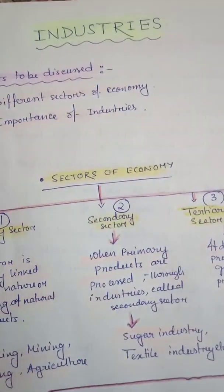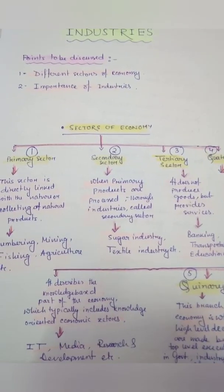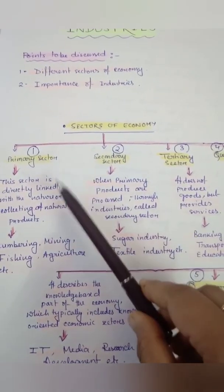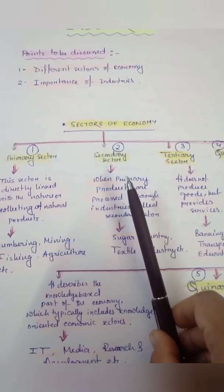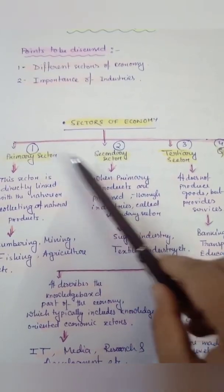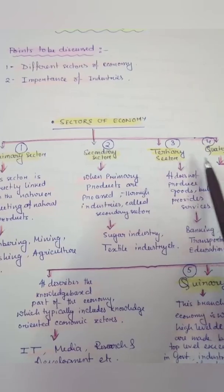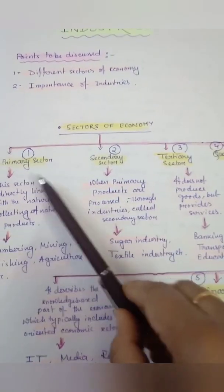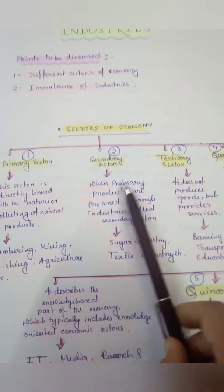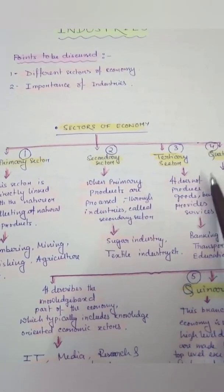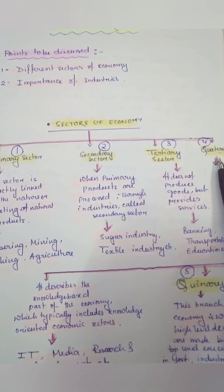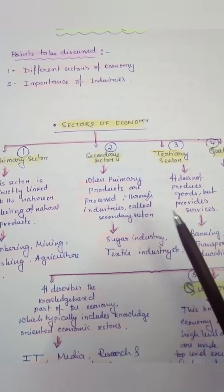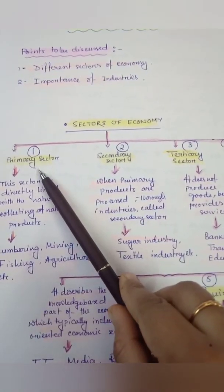Now, students, let's look at the different sectors of the economy. I have made flow charts here. Mainly we can see five sectors of the economy: primary, secondary, tertiary, quaternary, and quinary. In your syllabus, only three sectors are given — primary, secondary, and tertiary — but for your information, I have also shared the quaternary and quinary sectors so your concept will be more clear.